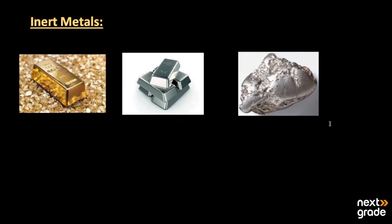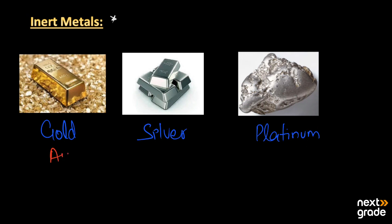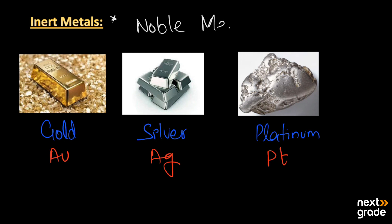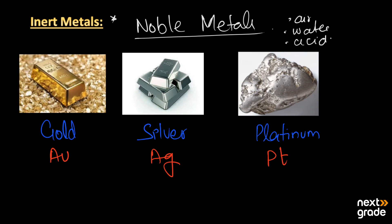Looking at examples of noble metals — also called inert metals — the first is gold (symbol Au), the second is silver (symbol Ag), and the third is platinum (symbol Pt). These three metals are known as both inert metals and noble metals. A key property is that they do not react with air, water, or any type of acid, which is the main reason they are called noble metals.